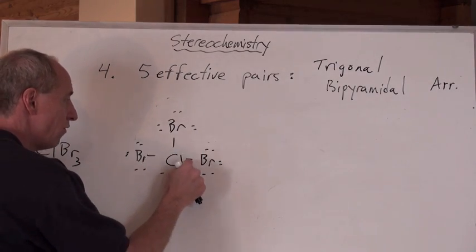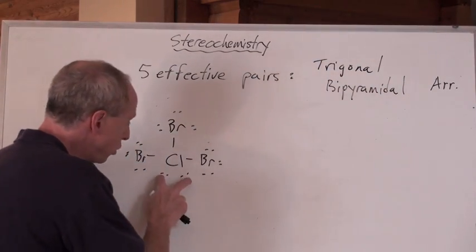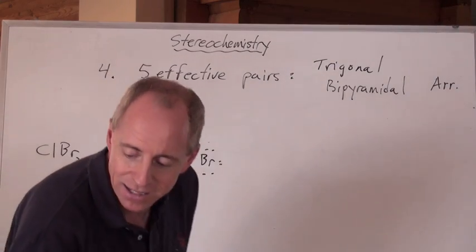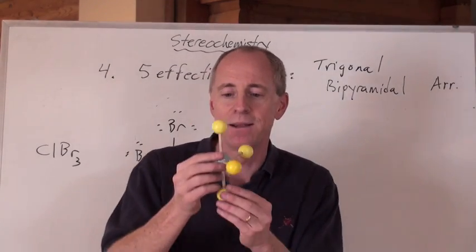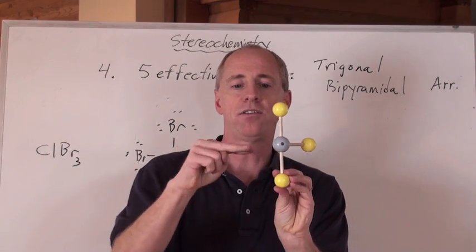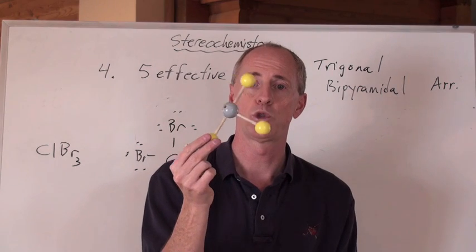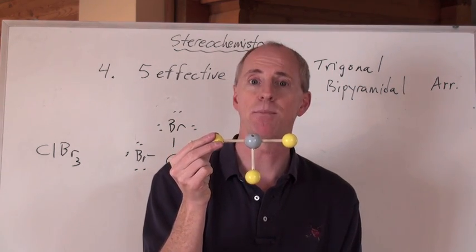What does that mean for this chlorine? One, two, three, four, five effective pairs. Trigonal bipyramidal arrangement. But where do you put these two lone pairs? In the plane, boss, the plane. So there's one lone pair, and there's the other lone pair, but they're not in the shape. So what are you left with?